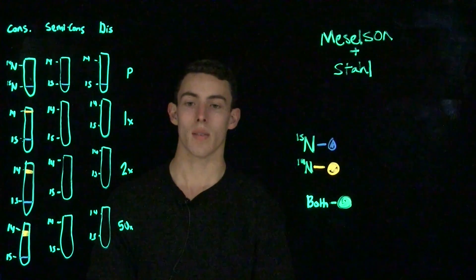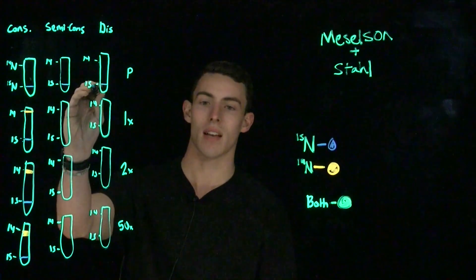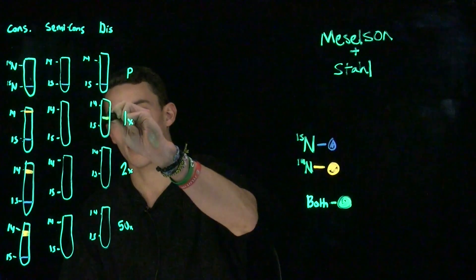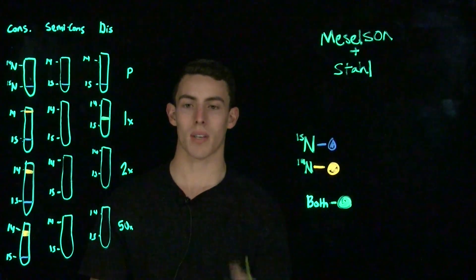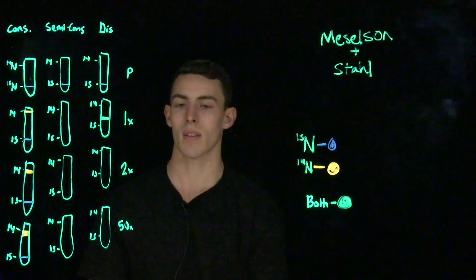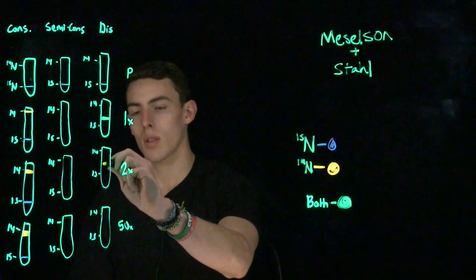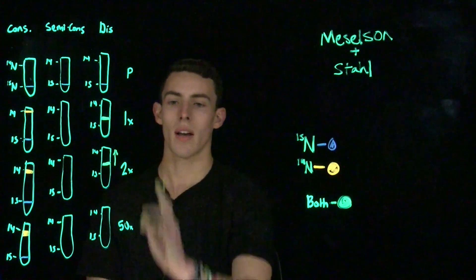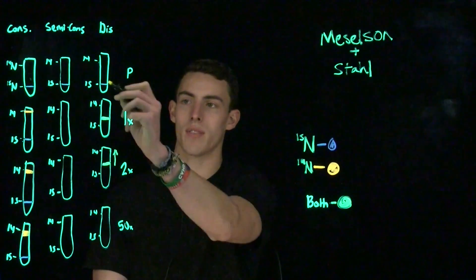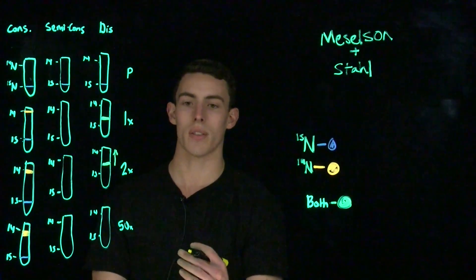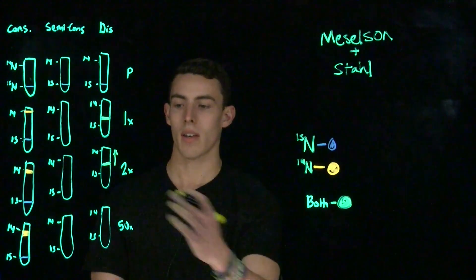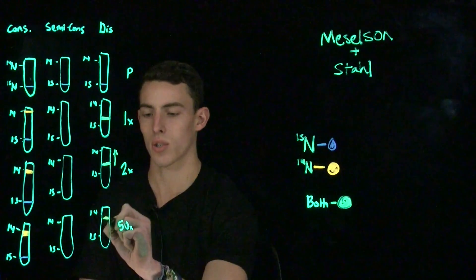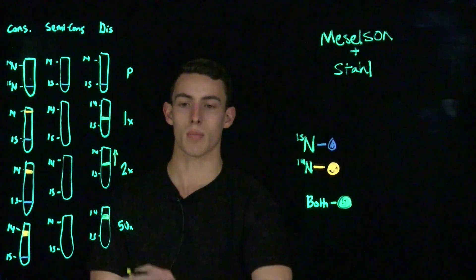With dispersive replication, again the parental strand would have a single band at the 15N level. However, after a single replication, we would see a band of both — because in dispersive replication, everything is cut up and pasted back together. After two replications, we would see roughly the same thing with two bands. But with dispersive replication, we're kind of moving up the container, because with each subsequent replication on the 14N medium, we're adding more and more 14N. So the molecular weight of each strand gets lighter and lighter. After about 50 rounds of replication, we would expect the band to be pretty close to or moving up towards the 14N level.